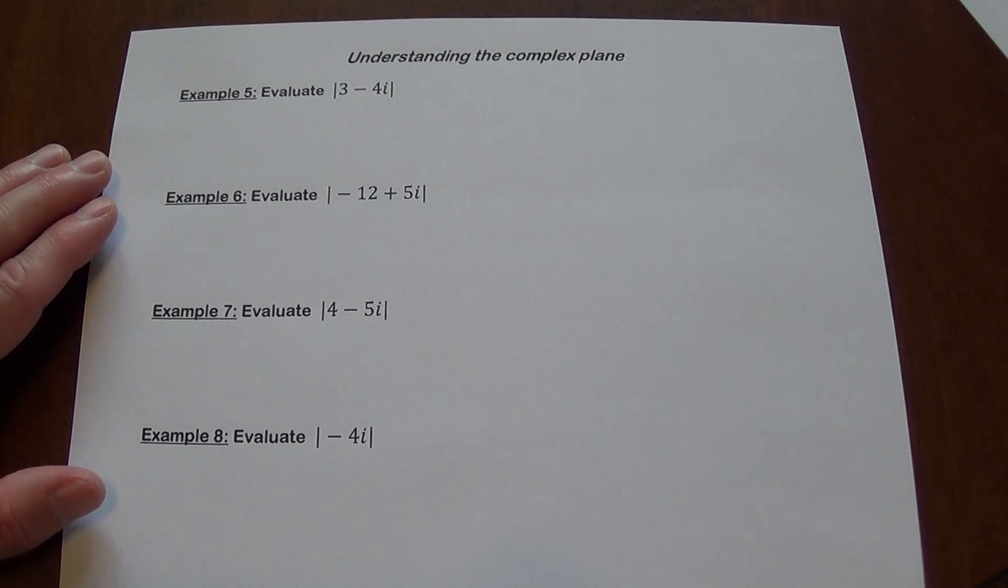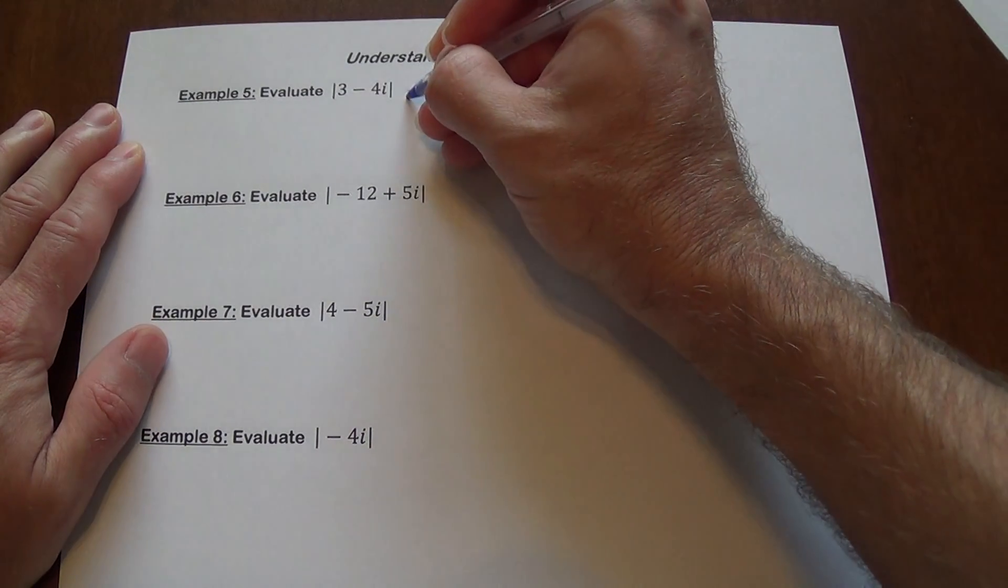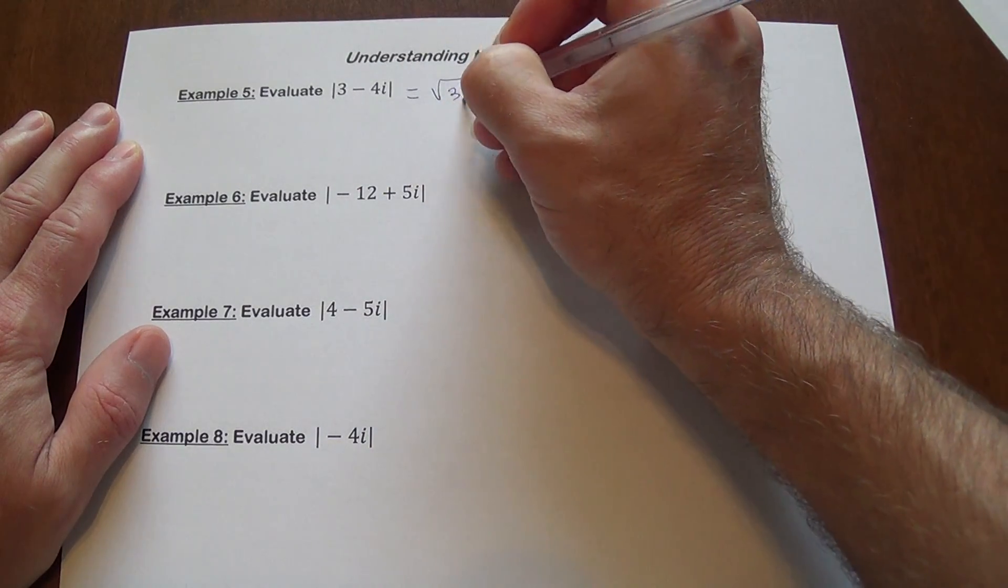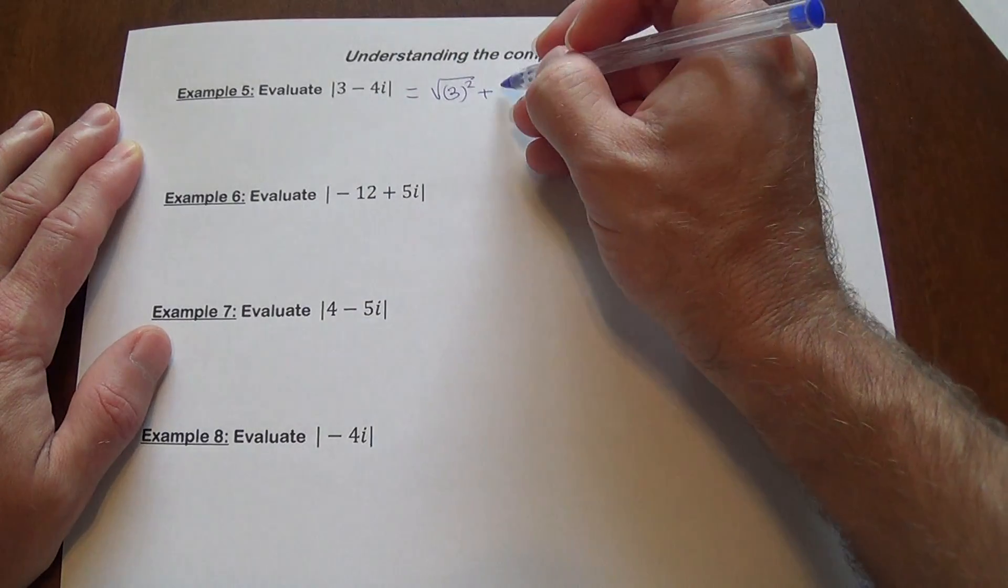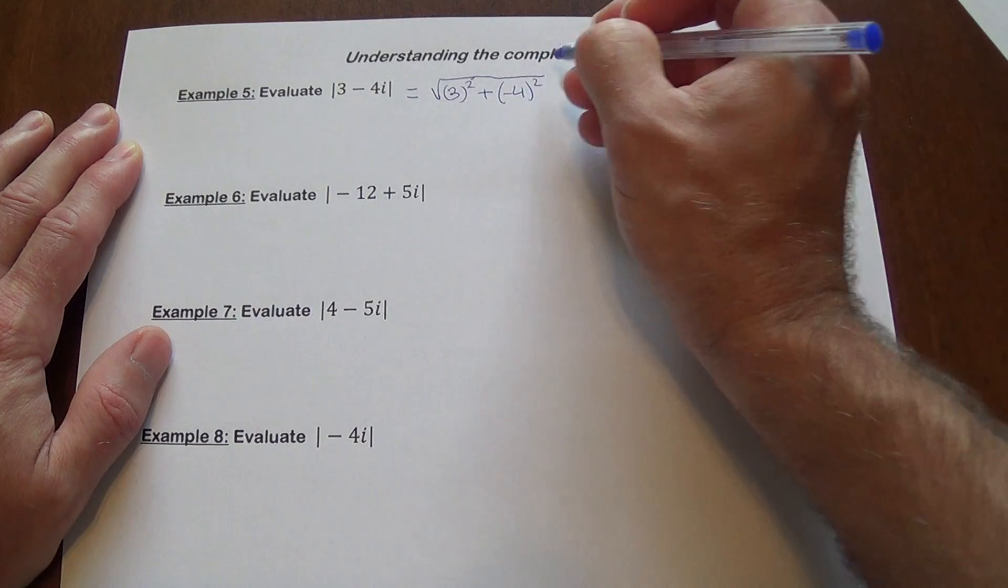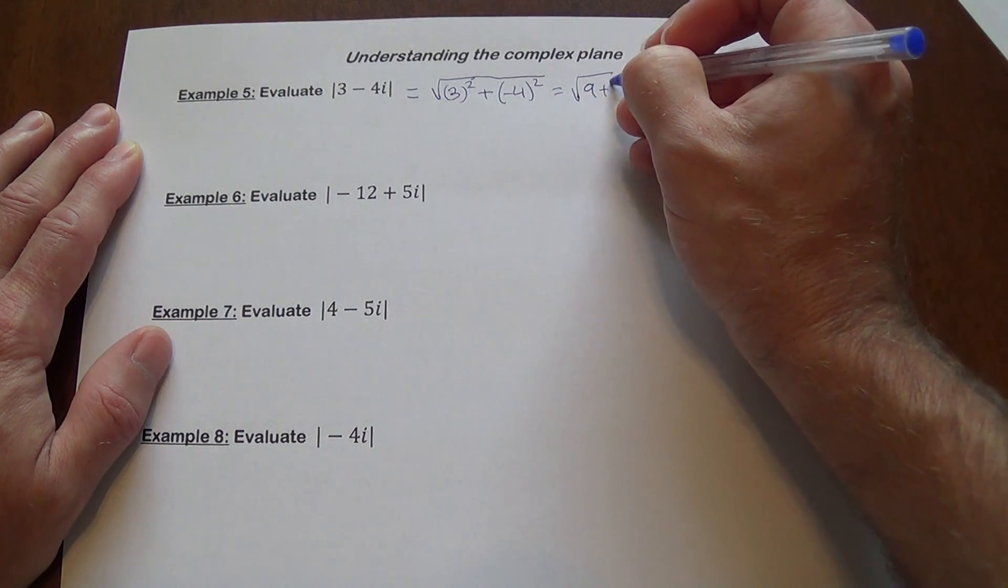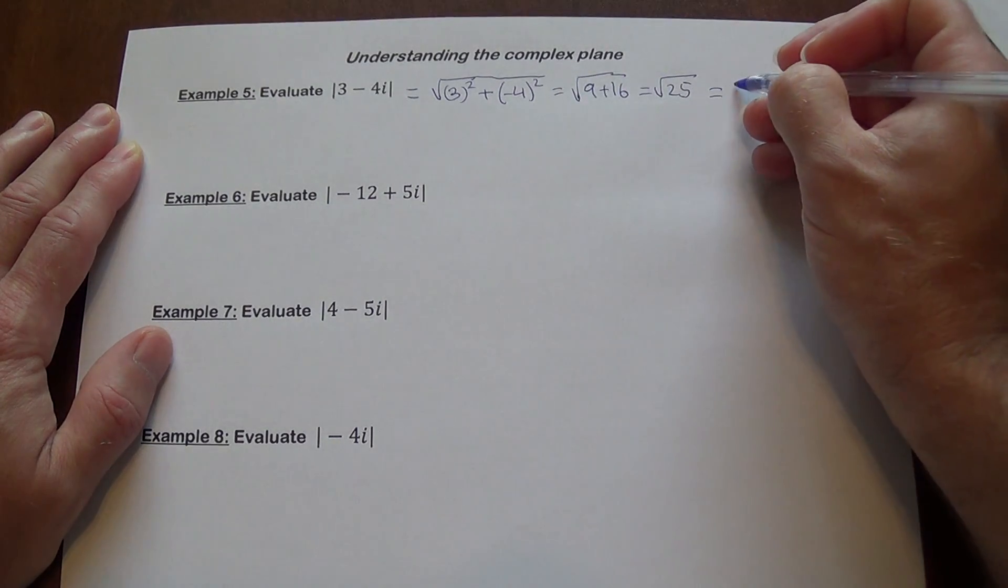So let's do a few problems. We're going to find a modulus for each one of these numbers. So the formula: 3, negative 4, square root of 3 squared plus, you need to be careful here because negative 4 is what you are going to square, but it will always give you a positive value. So it's the square root of 9 plus 16, which is the square root of 25, which actually gives us 5.